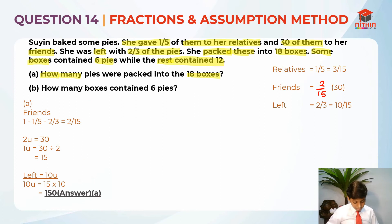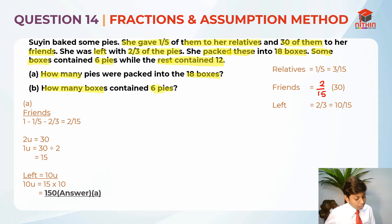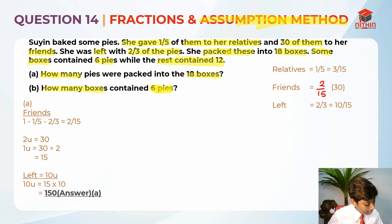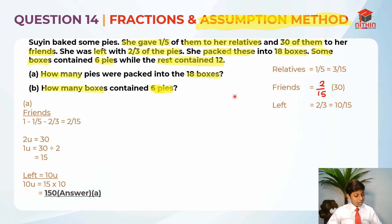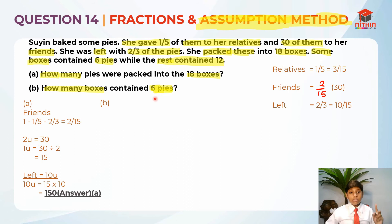Now let's move on to part B. Part B is asking us how many boxes contain 6 pies. This is where we need to use our assumption method. We should assume that all boxes contain 12 pies — we assume the opposite of what the question is asking, so that we get the opposite answer at the end.